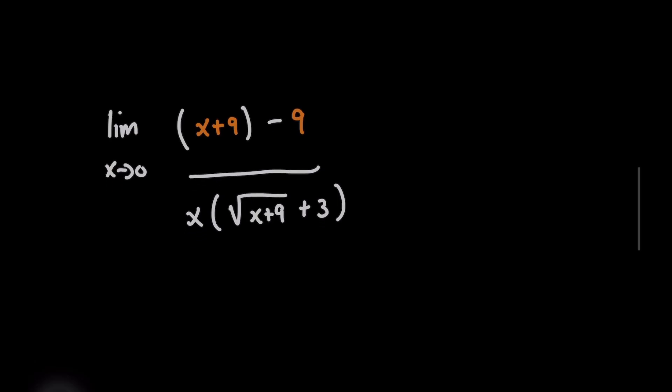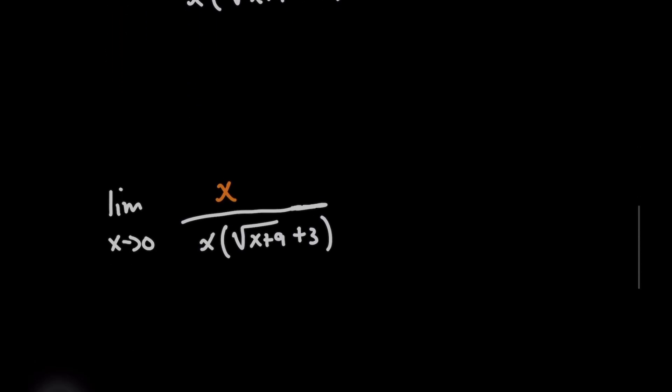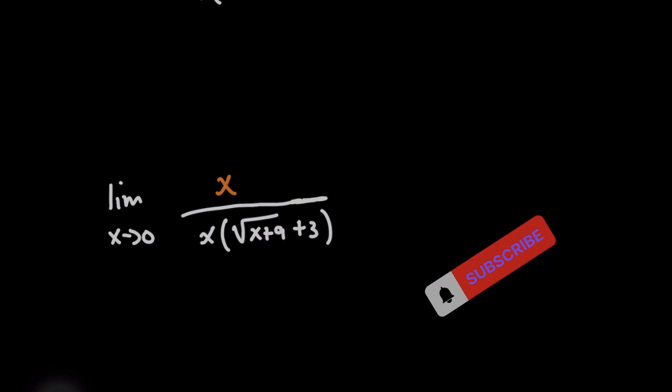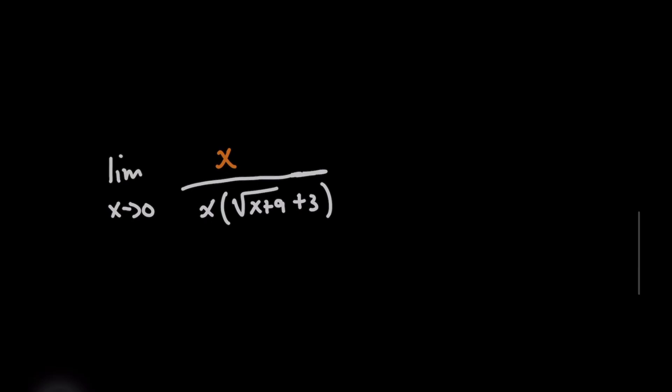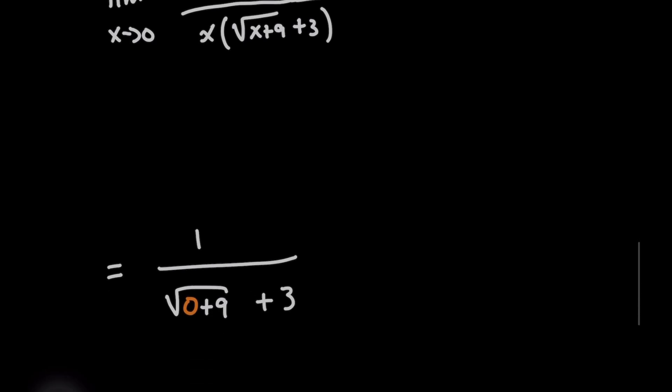And check this out, we can actually cancel x from the top and the bottom. And it's safe because we don't have to worry about x being zero on the denominator here, because this is a limit, and so we're just approaching zero.